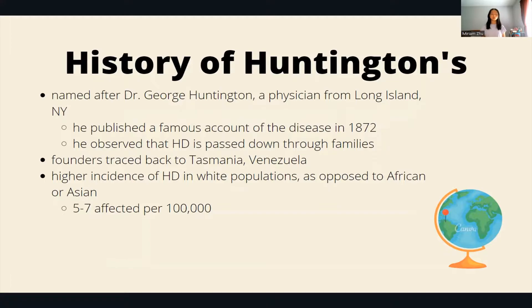Huntington's was traced back to Tasmania and Venezuela, and currently Huntington's affects white populations more than it affects African and Asian populations.